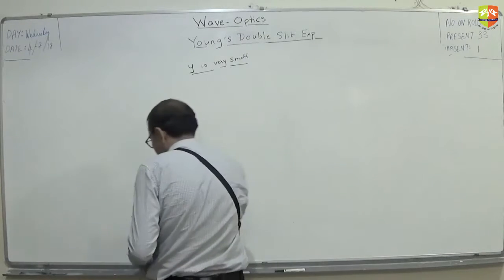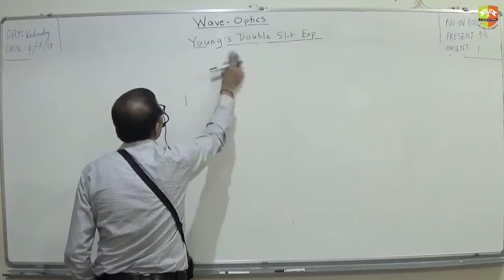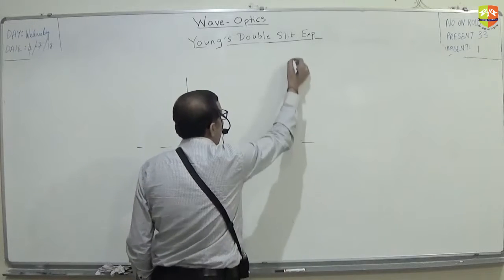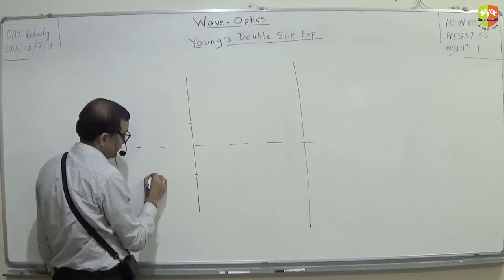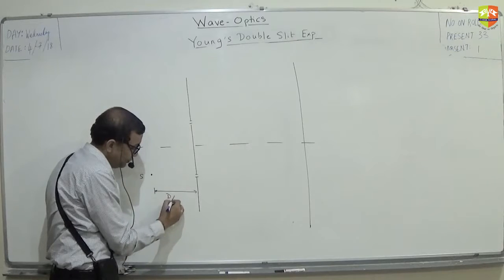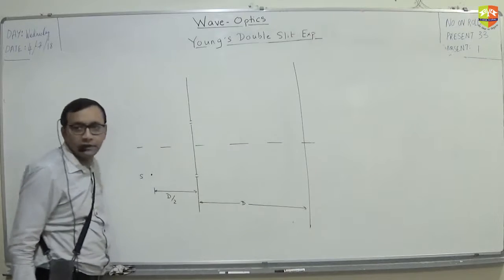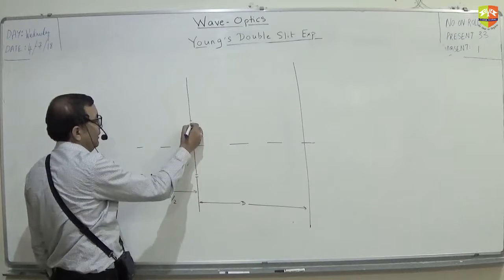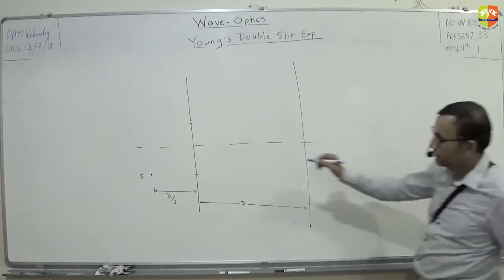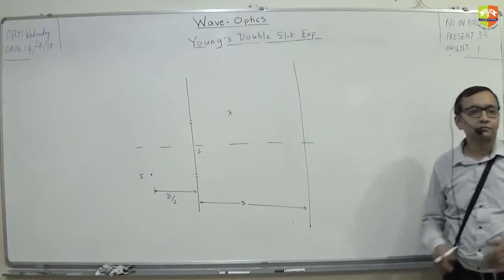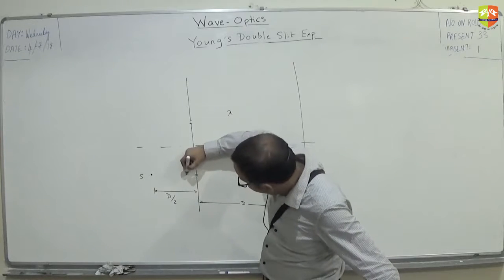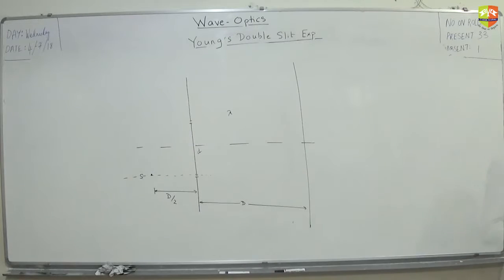Let's take another scenario. Draw Young's experiment again. You have a source over here. This distance is d by 2 and this distance is capital D. Find out the location of central maxima. Everything else is the same — separation small d, wavelength lambda. The source is in line with one of the slits.